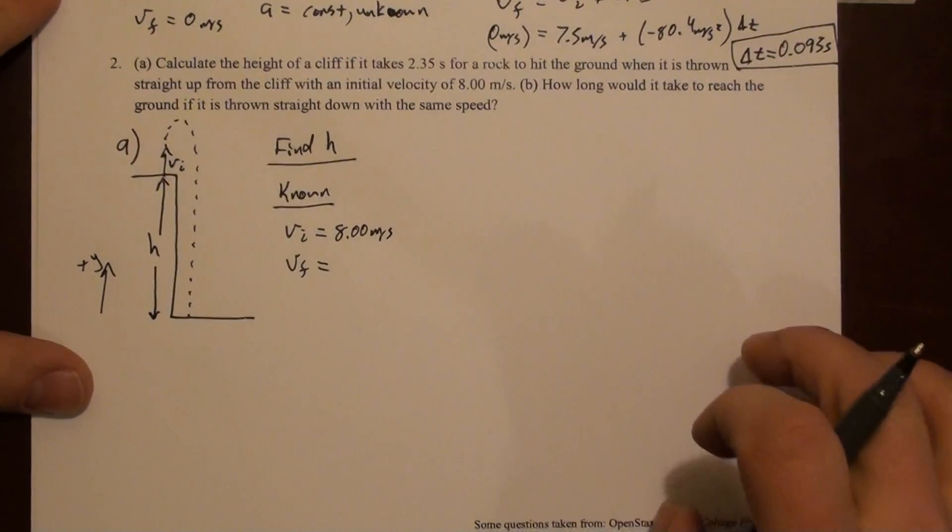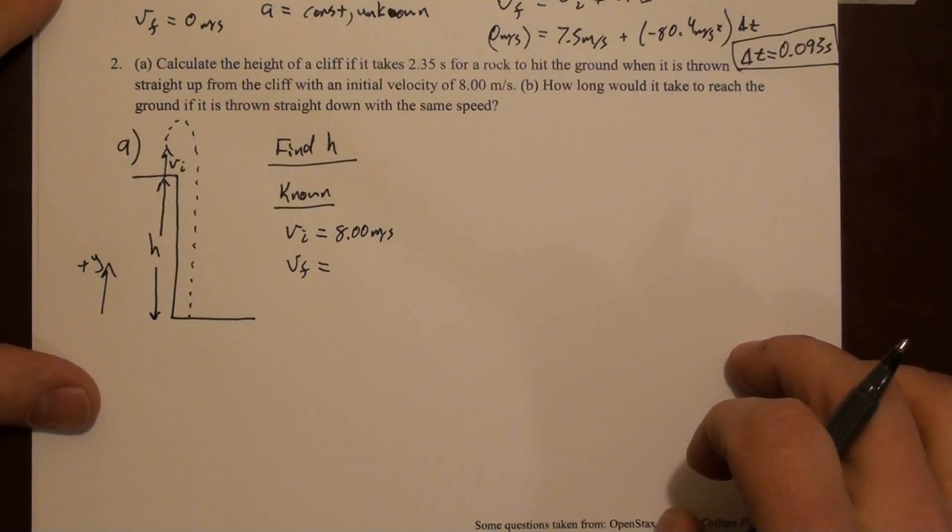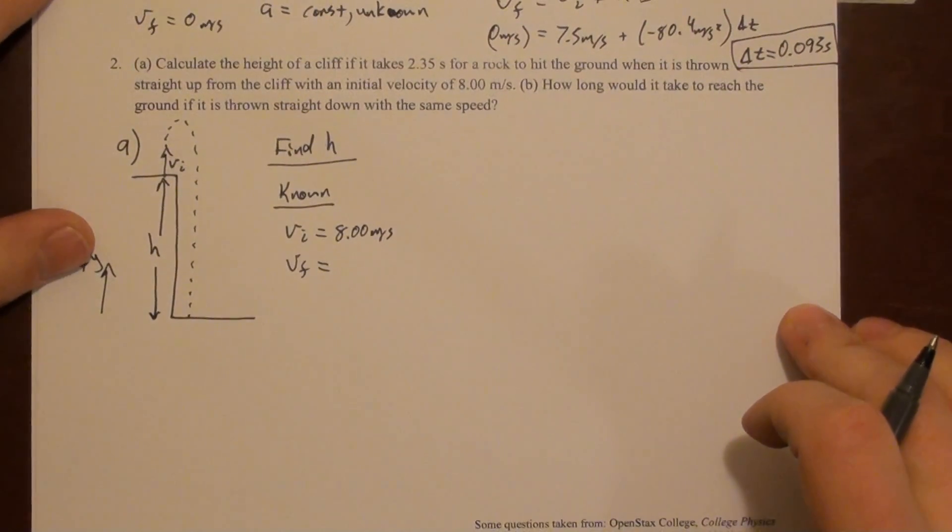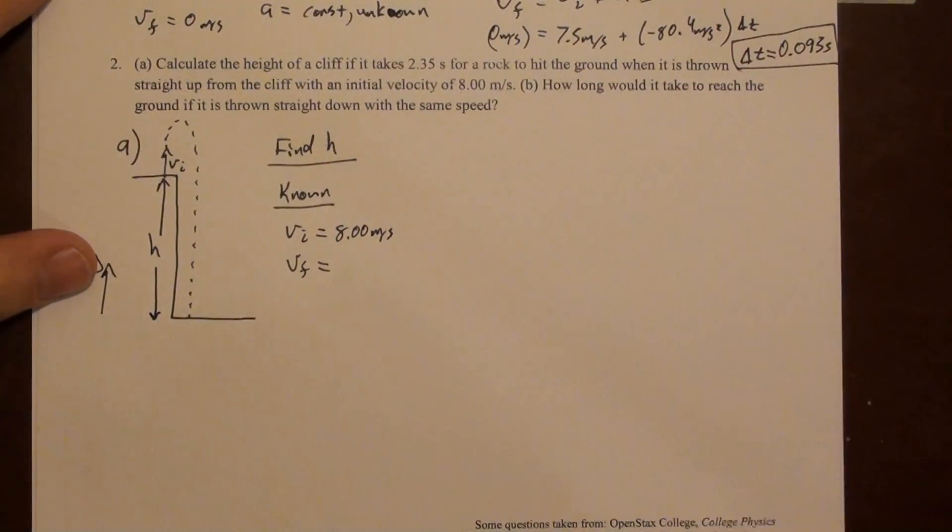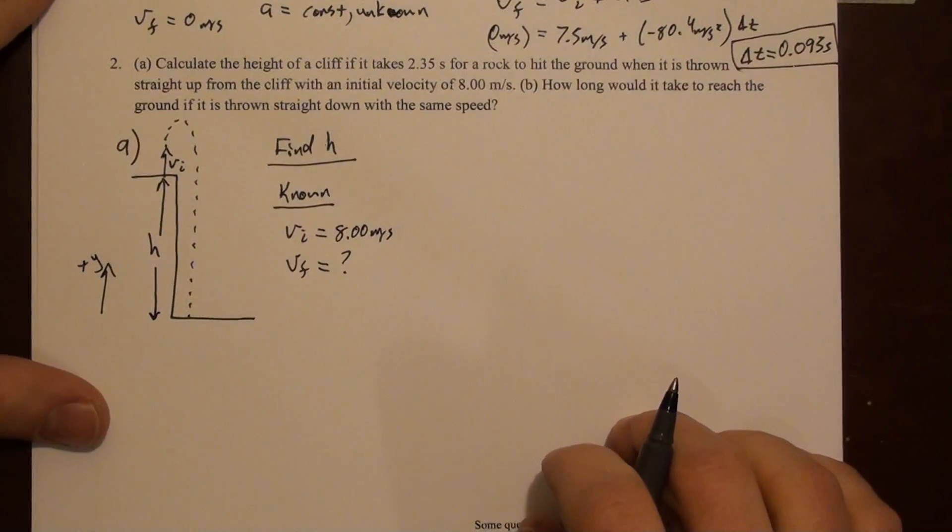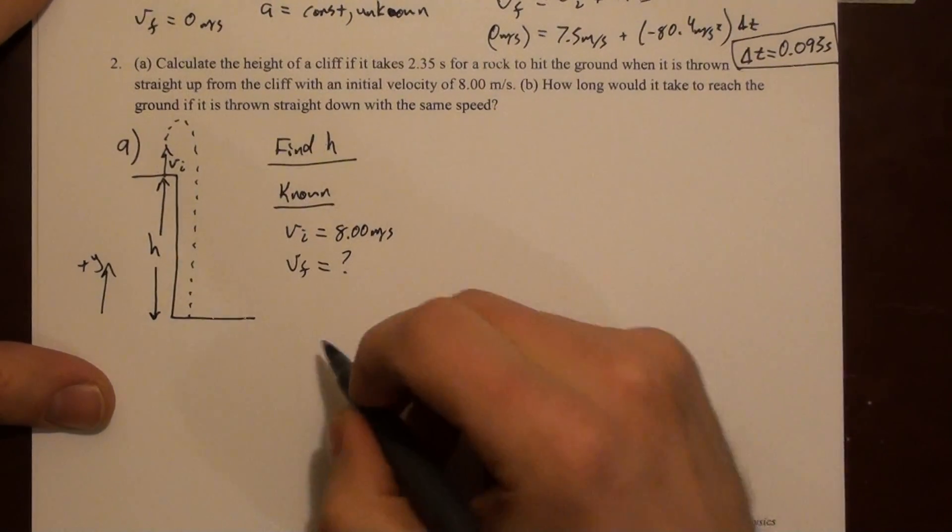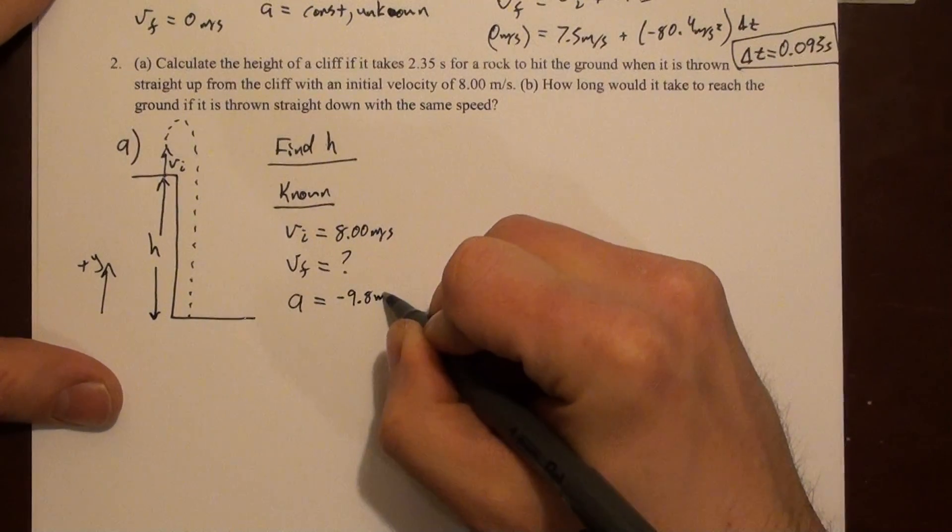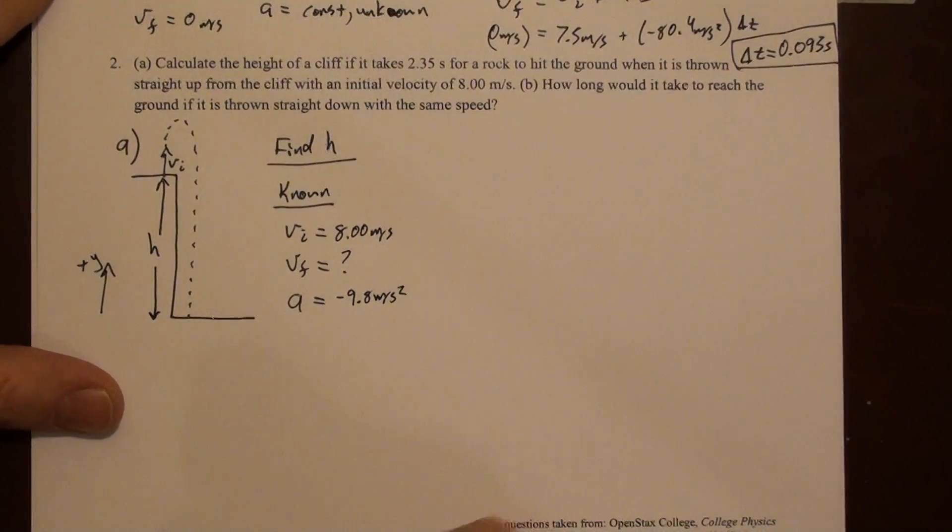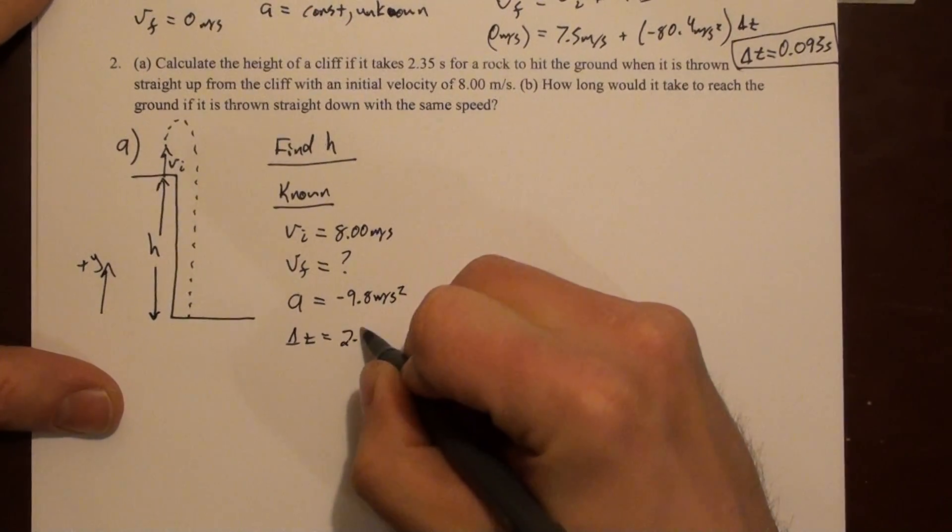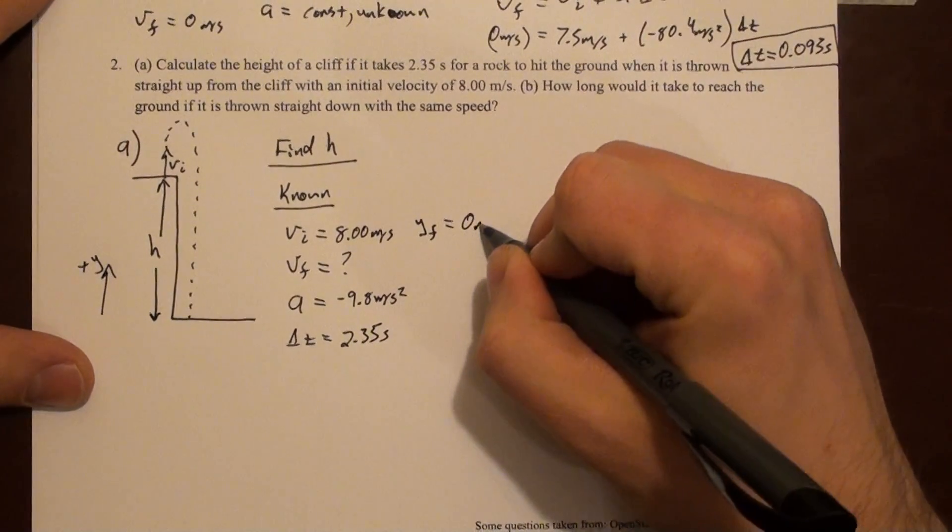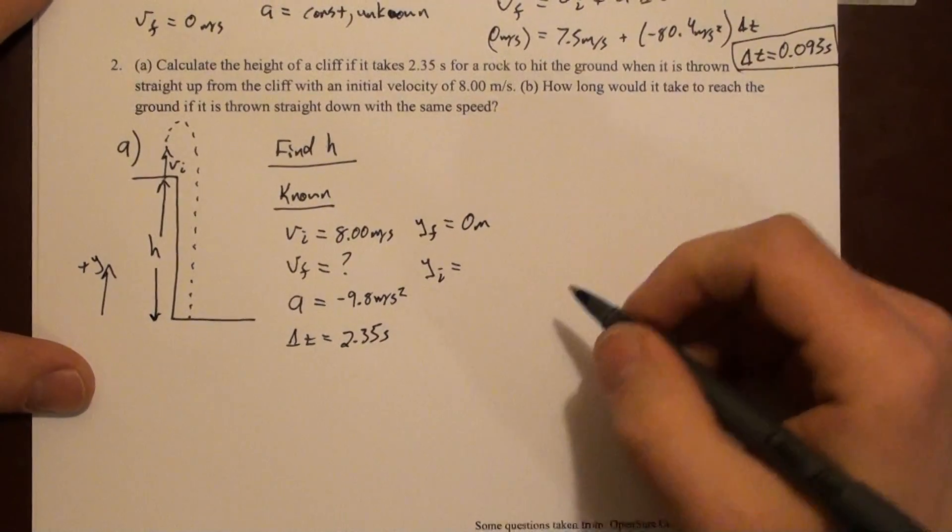But just before it hits the floor, it'll be going down really fast. So our equations account for the going down really fast. It does not account for the collision with the floor of this edge of the cliff, or off of the cliff. So we don't know what v final is. We do know the acceleration, though. Acceleration is minus g. So that's negative 9.8 meters per second squared. We are given a delta t of 2.35 seconds. We also know that y final is maybe zero meters and y initial is h.